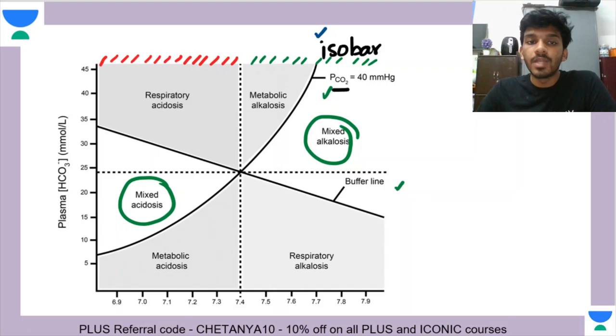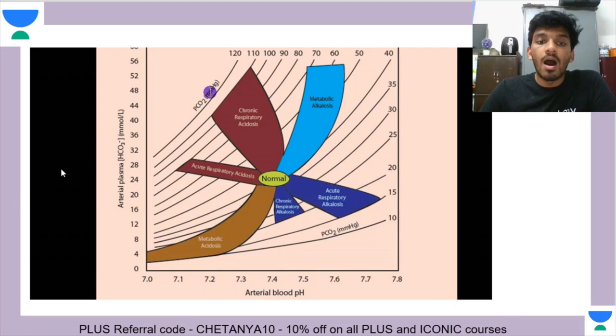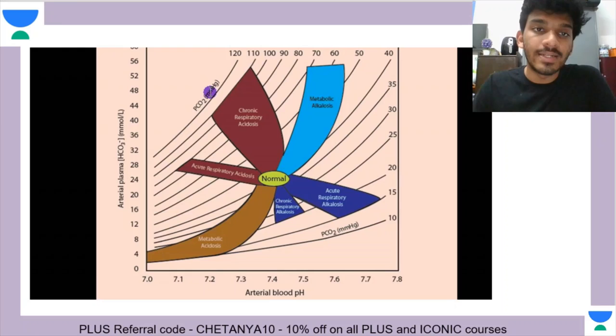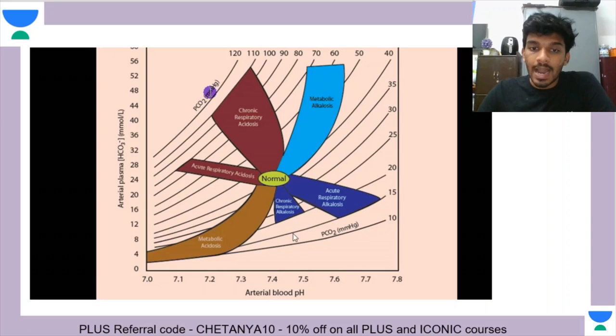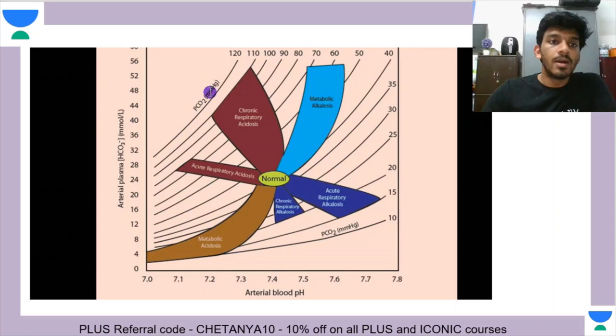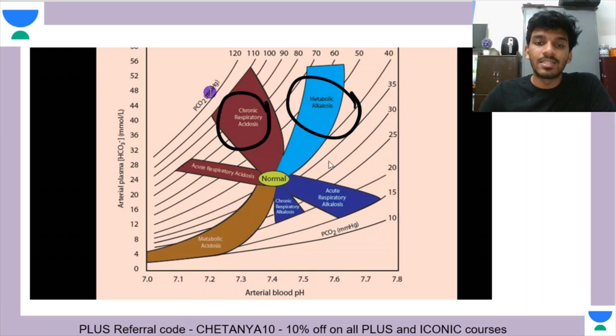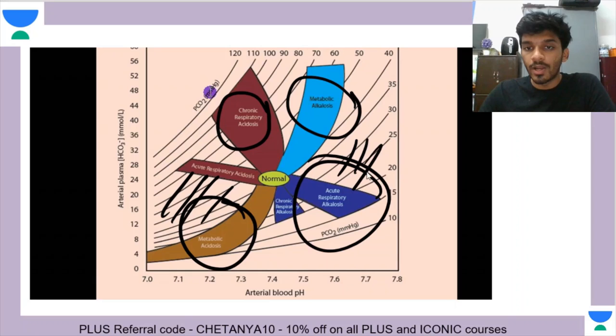Now when you come to the final Davenport diagram — the ultimate version — I have sequentially unfolded the more complicated diagram for you. These are all the isobars drawn, and the normal range of pH is 7.35 to 7.45. Anything towards the left is acidosis; anything towards the right is alkalosis. We've discussed the regions for respiratory acidosis, metabolic acidosis, metabolic alkalosis, and mixed — whatever lies in between is mixed.